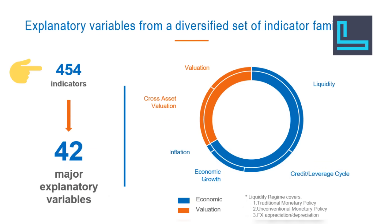We commenced with 450 indicators, each with over 50 years of historical data. These indicators include absolute valuations of asset classes, cross-asset relative valuations, and macroeconomic variables categorized into four families: inflation-related variables, economic growth-related variables, credit or leverage cycle-related variables, and liquidity-related variables encompassing both traditional and unconventional monetary policy, as well as FX appreciation or depreciation.